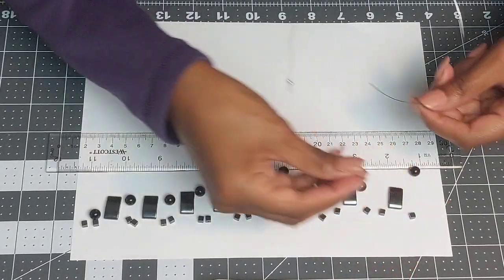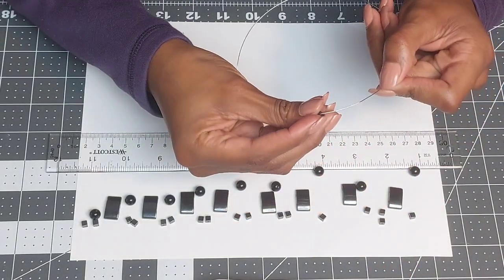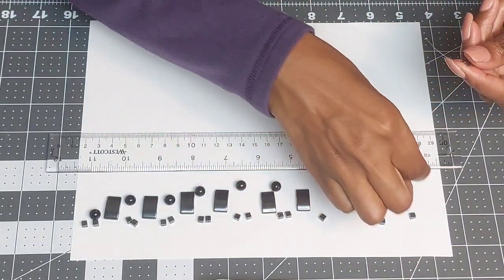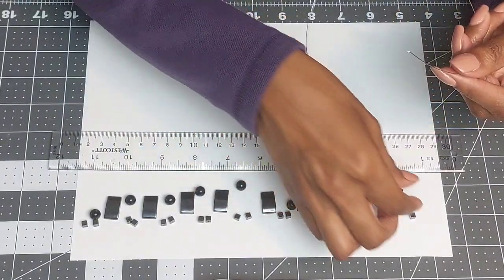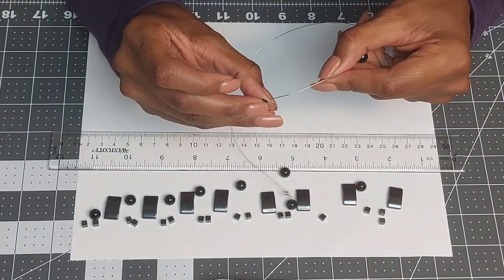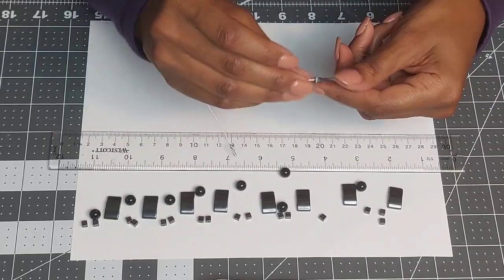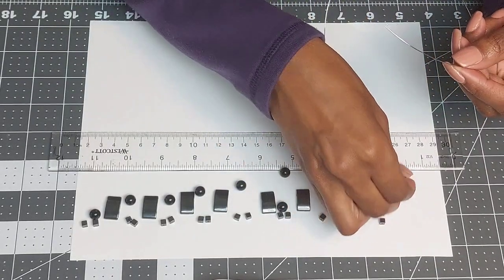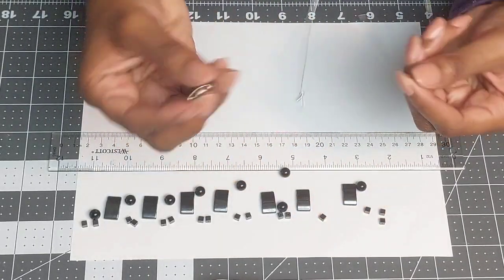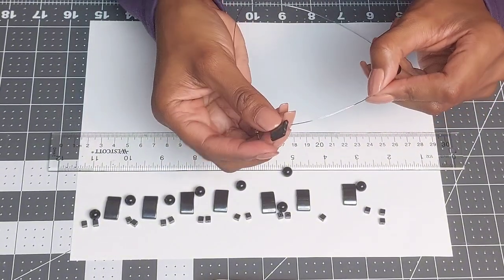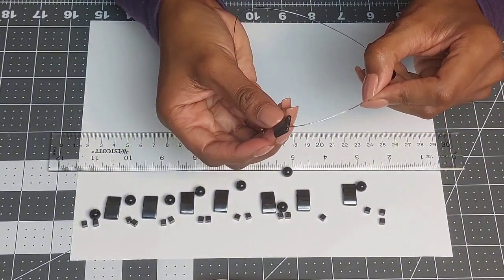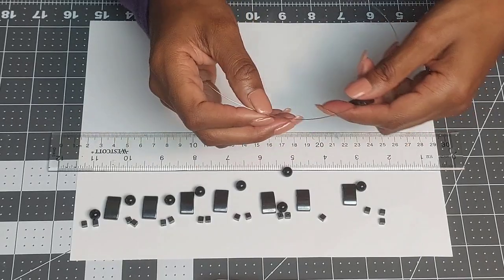So we're going to take our first piece of wire and go ahead and string on our pattern. So it's going to be the four millimeter square and eight millimeter onyx, four millimeter square, and go through the top hole, whichever, it doesn't matter which side, just go through the top hole of your tile bead. And we're going to continue that pattern all the way through.